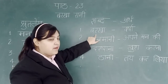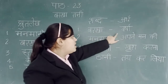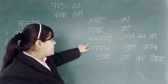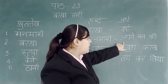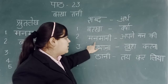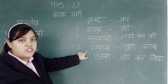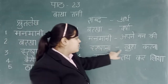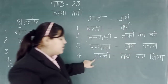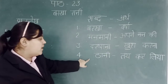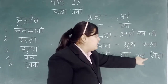First word is Barqa. Barqa ka kya harth hai? Varsha. Next is Manmani. Manmani ka harth hai? Apnei man ki. Next is Harshaanah. Harshaanah ka harth hai? Khushkarna. Next is Thani. Thani ka harth hai? Teh karliya.